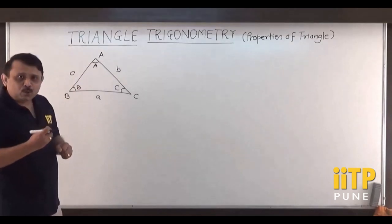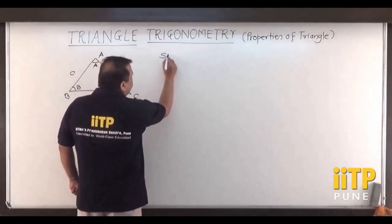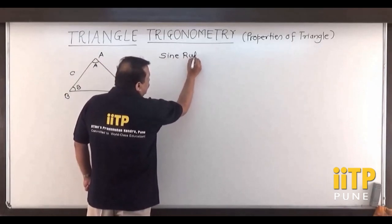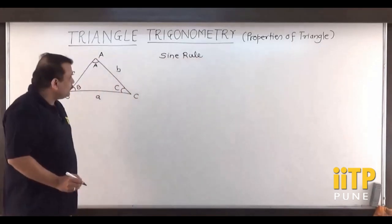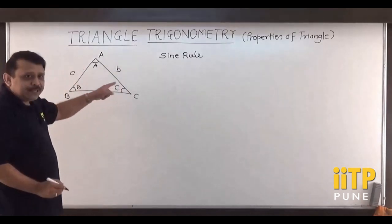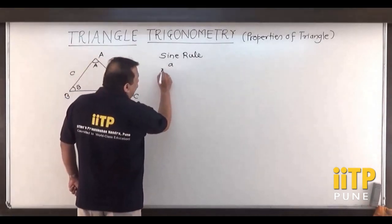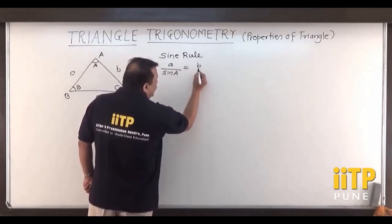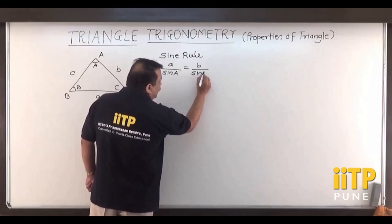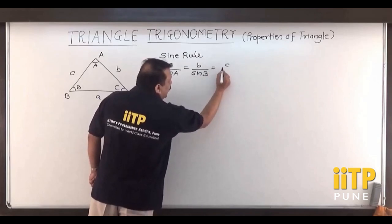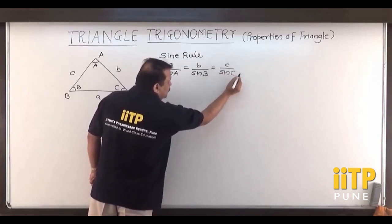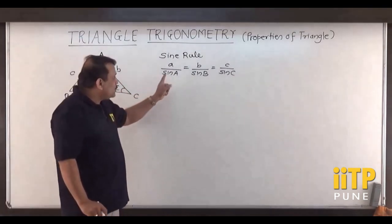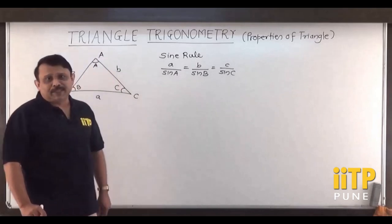The very first rule is known as the Sine Rule. The rule states that in a triangle ABC, a divided by sin A is equal to b divided by sin B is equal to c upon sin C. So the sides of the triangle are proportional to the sines of the angles of the triangle.